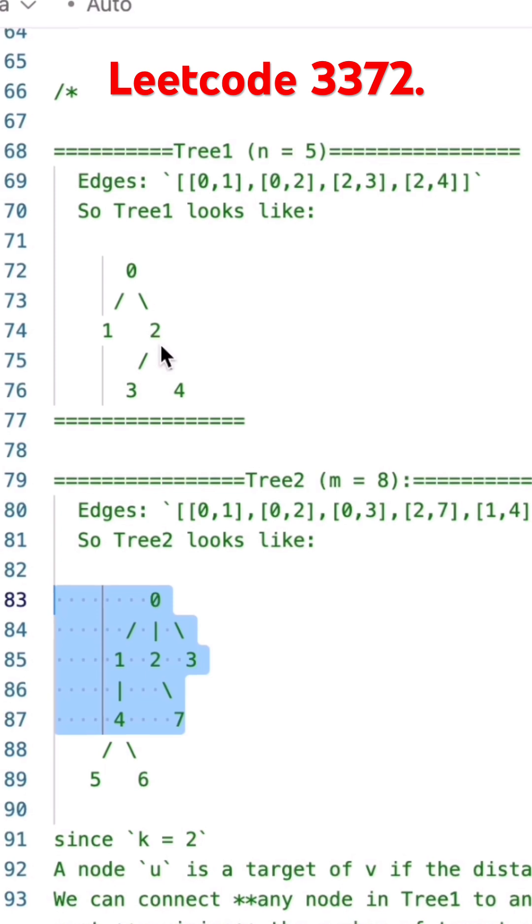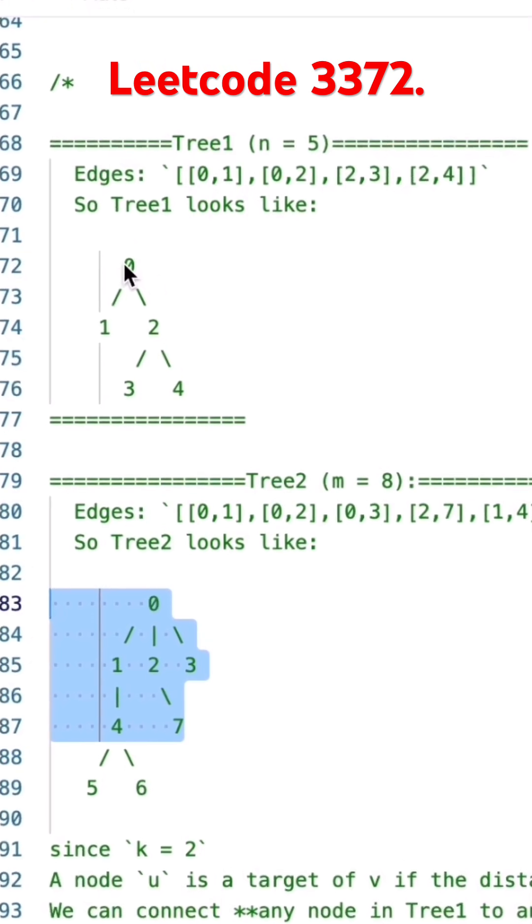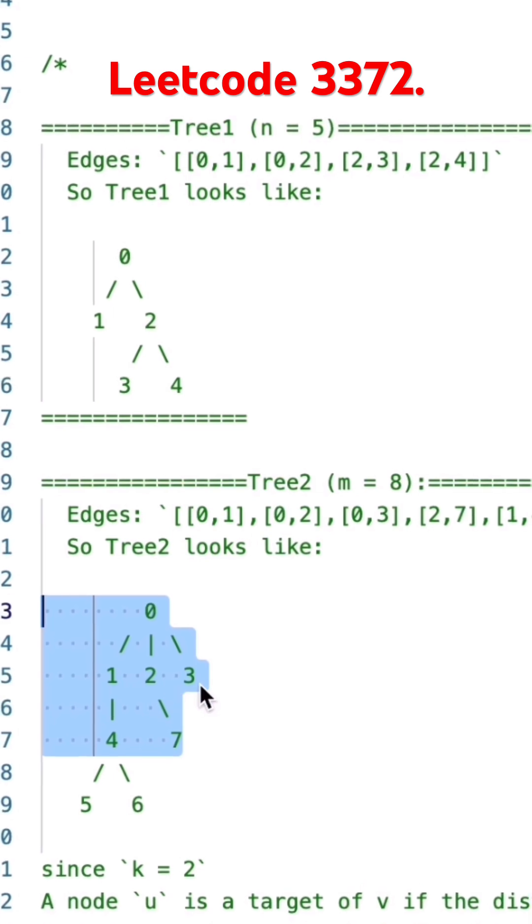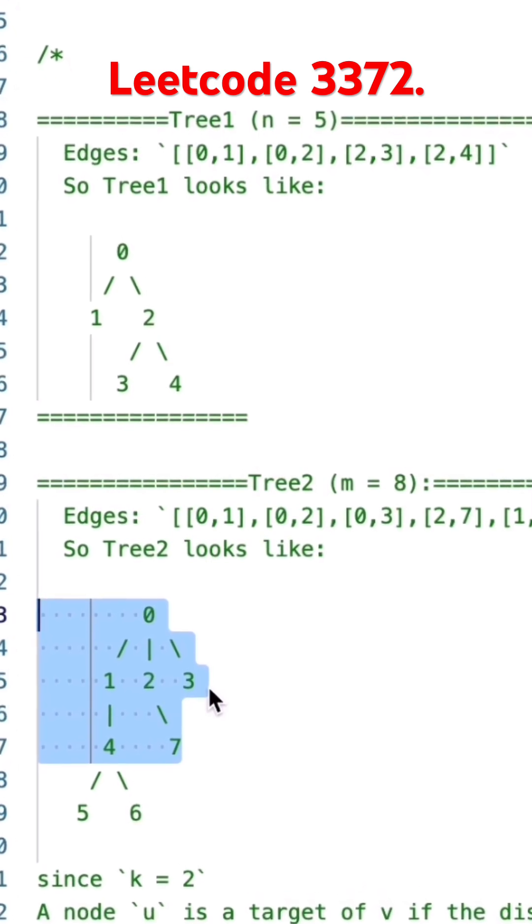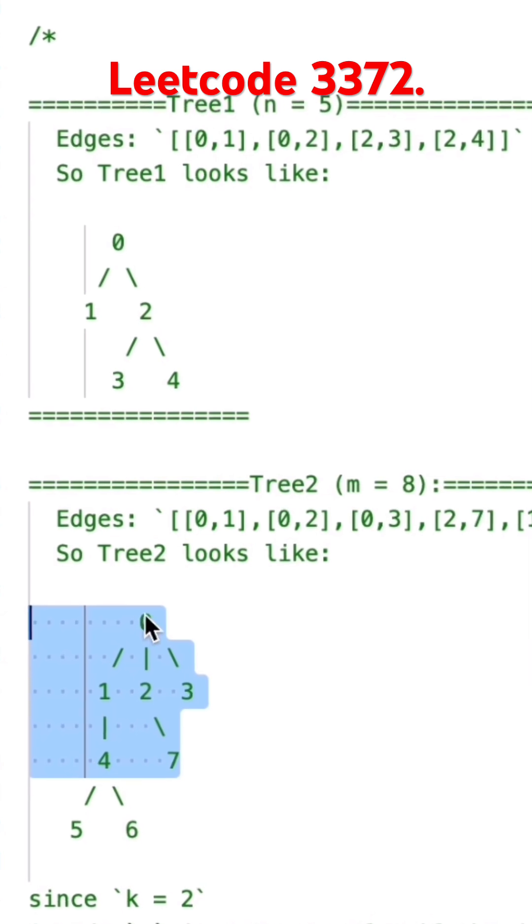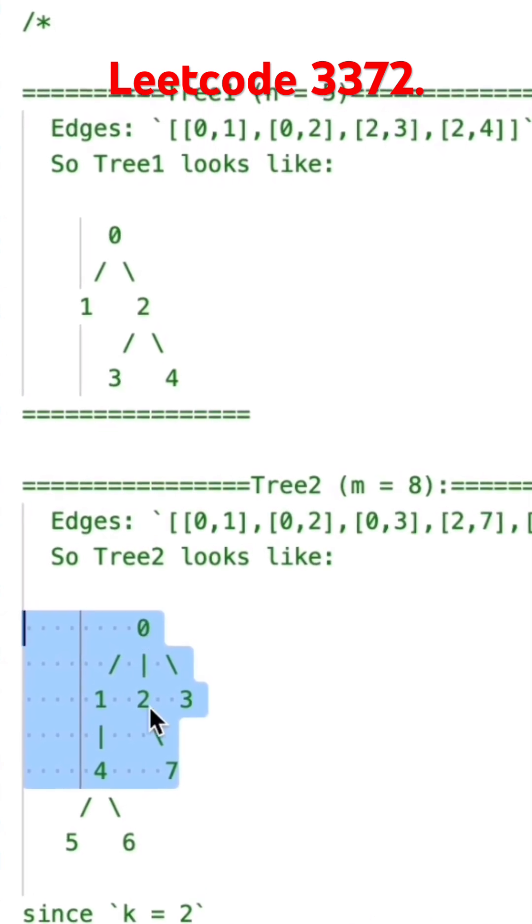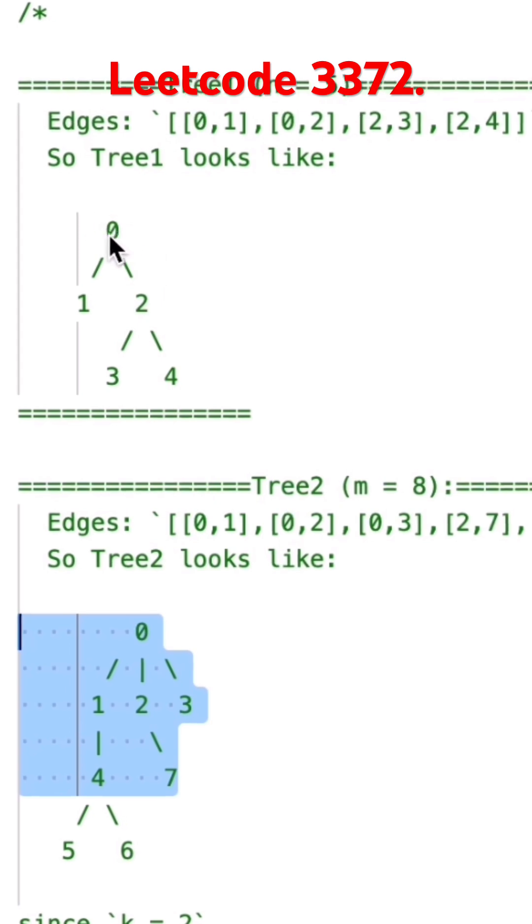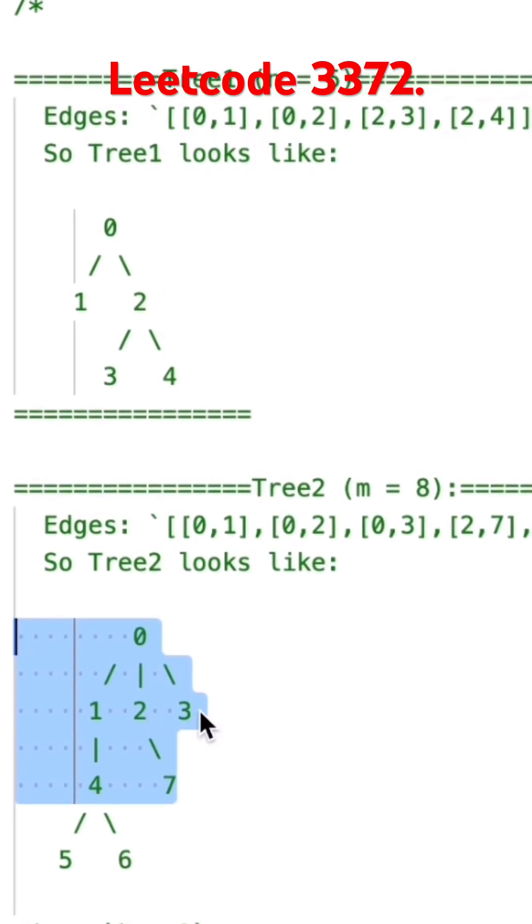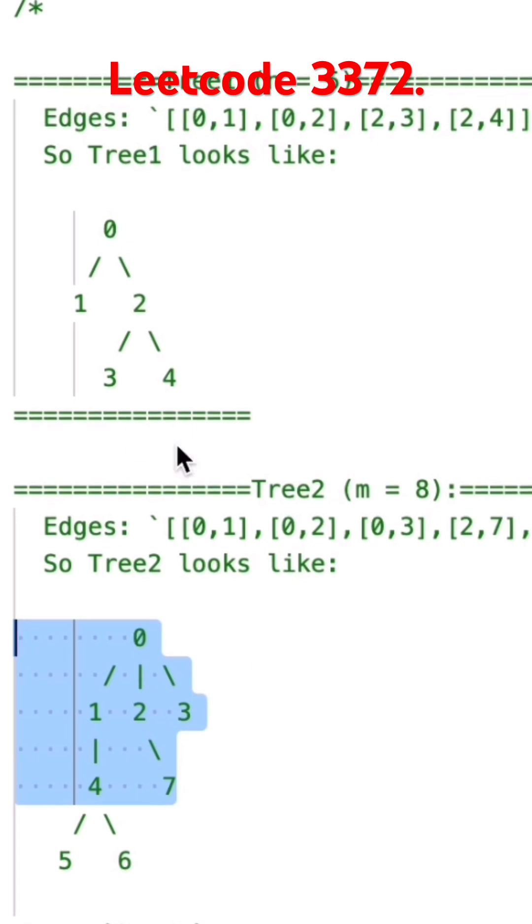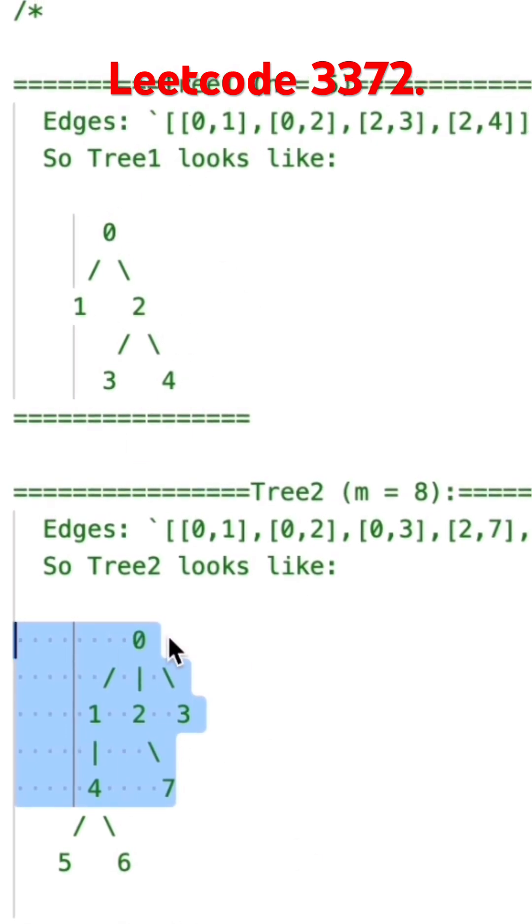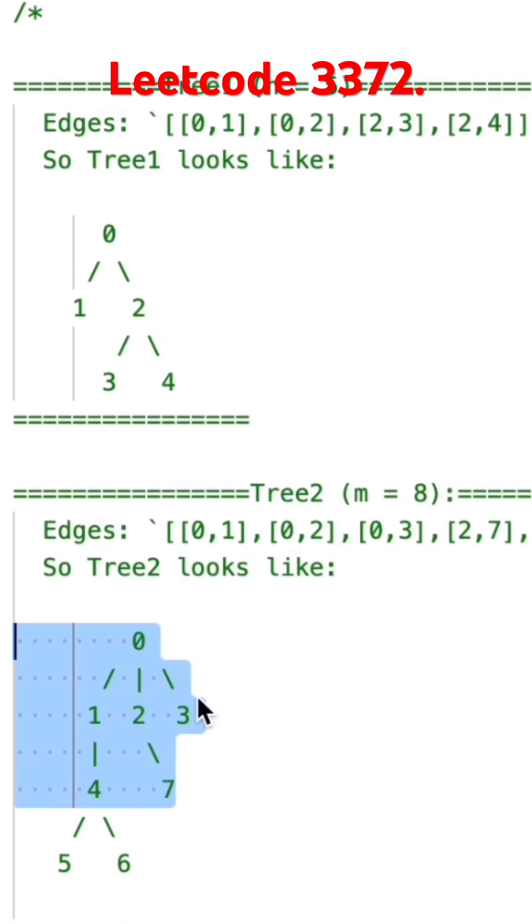From node 0, we can reach nodes 0, 1, 2, 3. Within k minus 1 steps from node 0, we can reach node 0 itself, then 1, 2, 3. If I connect from 0, I can connect to 0, 1, 2, and 3 - that's 4 nodes. Tree 1 already has 5 nodes, tree 2 has 4 nodes. We can connect these 4 nodes.